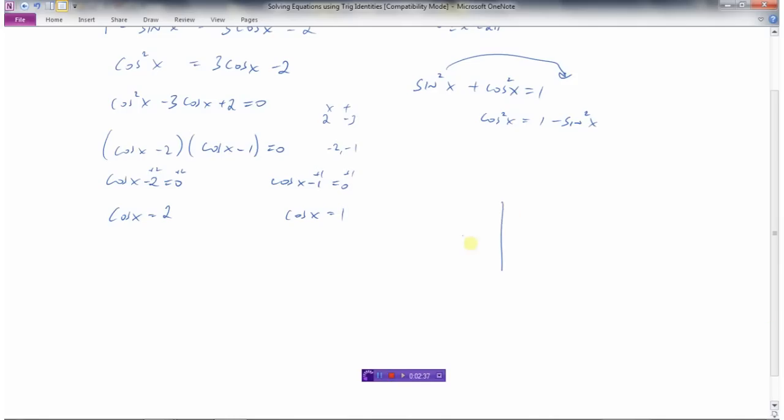Remember the cosine graph kind of looks something like this. Cosine only goes between negative 1 and 1. So anytime you get something like cos x = 2, where this ratio is more than 1 or less than minus 1, these are great because they will have no solution. Cos x never gets to 2, it only goes up to 1 and down to minus 1.